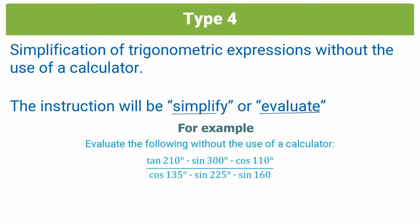An example of a type 4 trig question would look like this, where you are told to evaluate. See here we have our key instructional keyword: evaluate. You could also be told to simplify, and take note that you can't use a calculator. So when solving with all these angles, you aren't allowed to punch values into your calculator. You should be able to go from tan 10 to 1 over root 3 just by knowing your special angles mentally. You'll be given lots of trig functions with various numeric arguments — most will be special angles — and you'll be expected to solve these without a calculator.